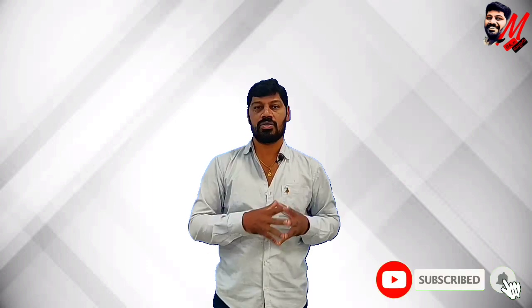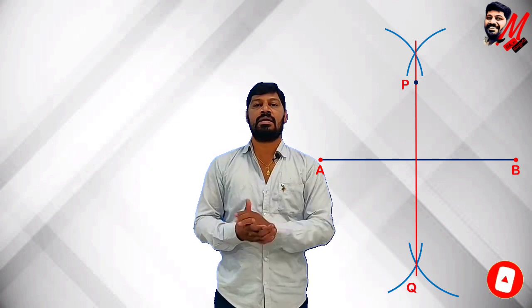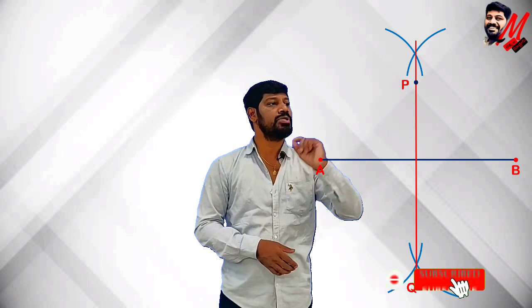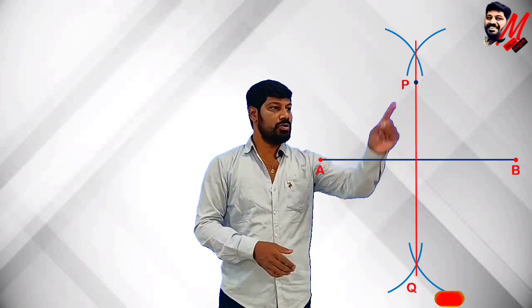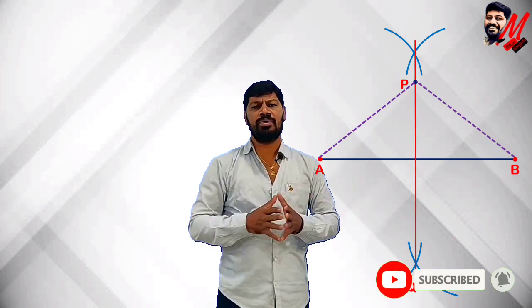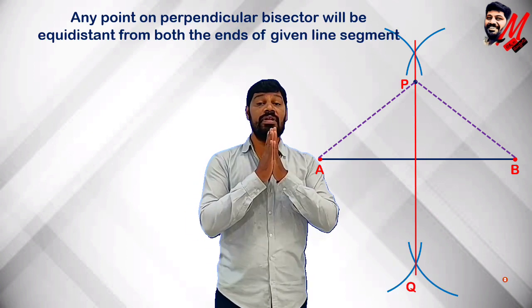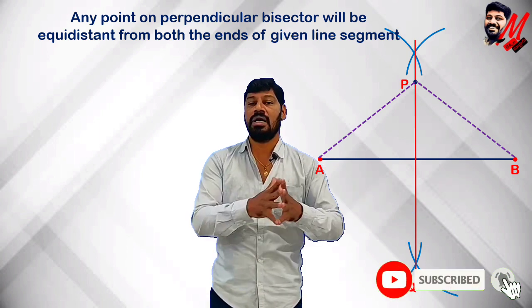In this video, we have already constructed a perpendicular bisector of a line segment, using more than half radius and joining both ends. Any point P on the perpendicular bisector is equidistant from both ends — that is, PA is equal to PB. If you are aware of this, apply the congruence of triangles. As a statement: any point on the perpendicular bisector will be at equal distance from both ends of the given line segment. This is a very powerful statement that we will use in every problem.